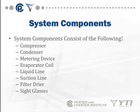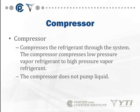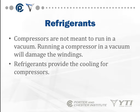Your basic system components consist of a compressor, condenser, metering device, evaporator coil, liquid line, suction line, filter dryer, and sometimes sight glasses. The compressor takes a low-pressure vapor refrigerant and outputs a high-pressure vapor refrigerant. The compressor does not pump liquid — it is not a liquid pump. Compressors are also not meant to run in a vacuum, as that will cause the oil to boil and melt the insulation off the windings. Refrigerant also absorbs heat from the compressor windings as it flows through.